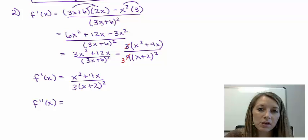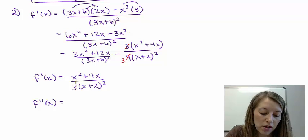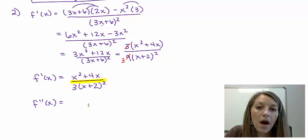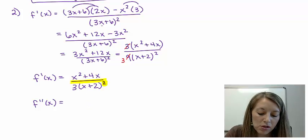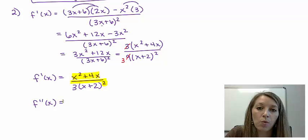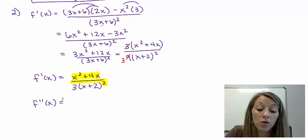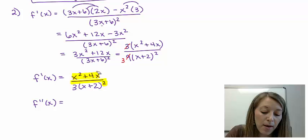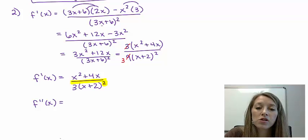Now taking the second derivative, I have a fraction so I need the quotient rule, and an inside-outside piece so I also need the chain rule. If I had factored the numerator, I would also need a product rule. Leaving it in this format means I just have the quotient and chain rule, which is enough. So applying the quotient rule: low d-high gives the original of the low times the derivative of the high, which is 2x + 4, minus high d-low.